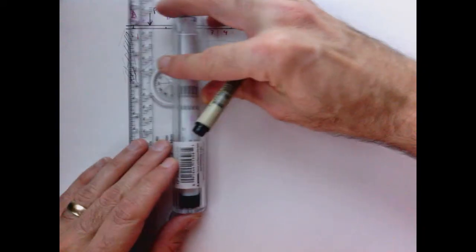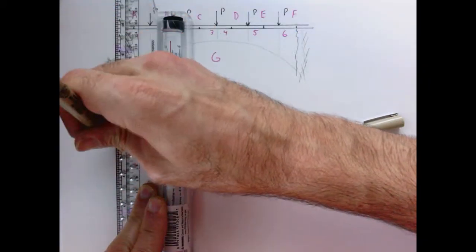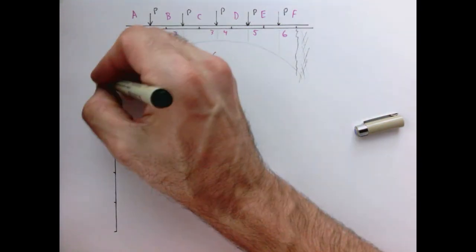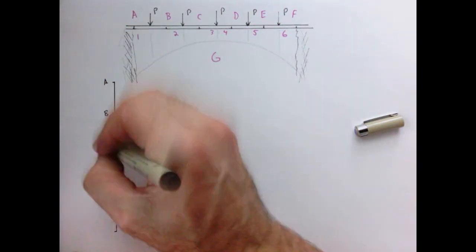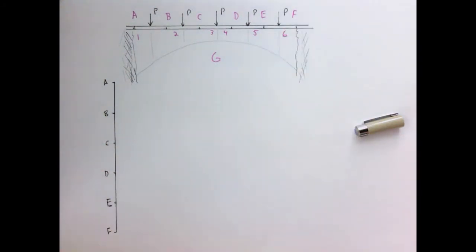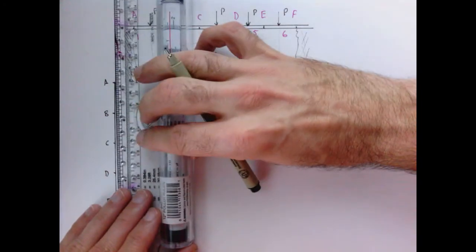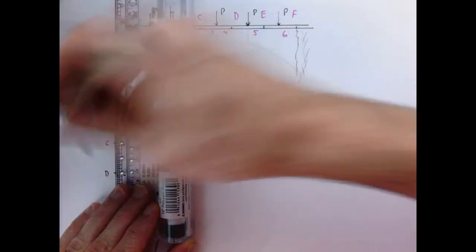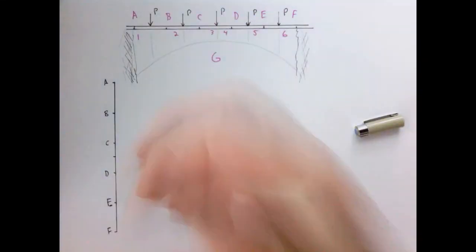Let's start by drawing our load line. I'm just going to use one inch for every unit load. So these are my points A, B, C, D, E, and F. And point G here is going to be located right in the middle, right dead center between points C and D.